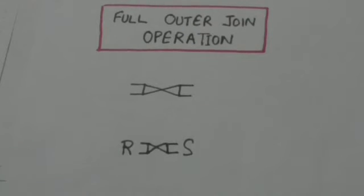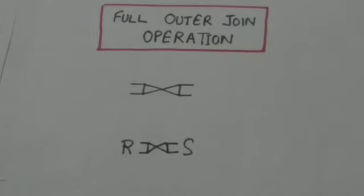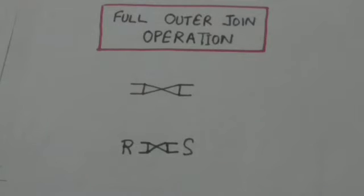If a tuple of relation R doesn't have any matching tuple in relation S, then the attributes of relation S in the resulting relation will be padded or filled with null values. Similarly, if a tuple of relation S doesn't have any matching tuple in relation R, then the attributes of relation R in the resulting relation will be padded with null values.